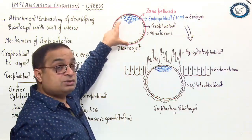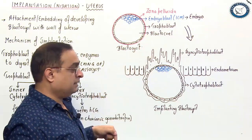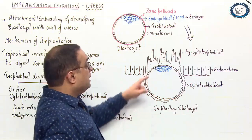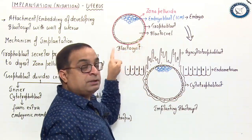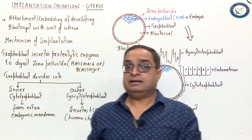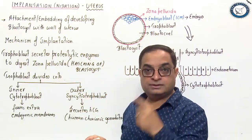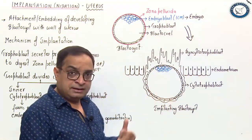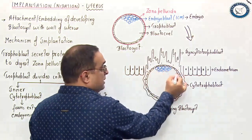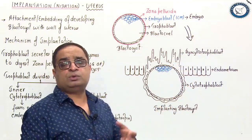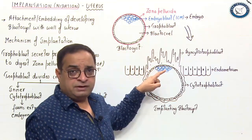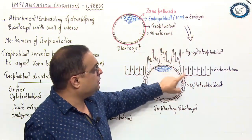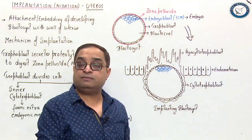Here we will see how this structure attaches with the wall of the uterus. I have drawn this diagram to show the process of implantation. These are the columnar cells of the uterus — the endometrium. Here, the zona pellucida has dissolved, shown by the absence of the red layer. When zona pellucida dissolves, the next step is that the trophoblast divides into two layers: inner cytotrophoblast and outer syncytiotrophoblast. The syncytium refers to a multi-nucleated structure where cellular boundaries are not clear. Syncytiotrophoblast penetrates deep into the uterine endometrium and lays the foundation for the placenta.